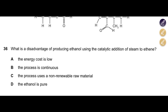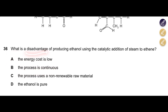What is the disadvantage of producing ethanol using catalytic addition of steam to ethene? The energy cost is low — no, actually the energy cost is high. The process is continuous — yes, but that is an advantage, not a disadvantage. The process uses a non-renewable raw material — correct, it is made from petroleum. Answer for question 36 is C. Fermentation, on the other hand, uses sugar cane which is renewable.